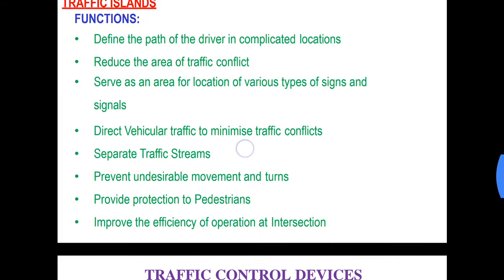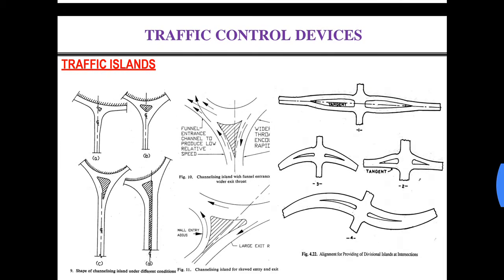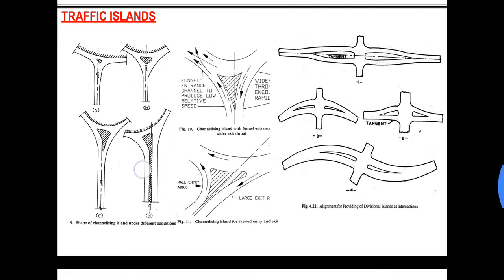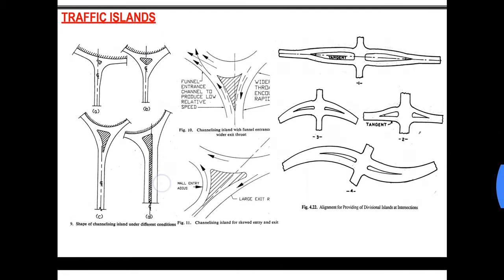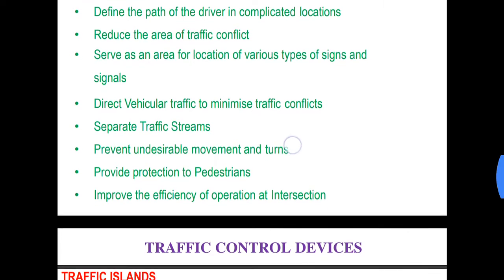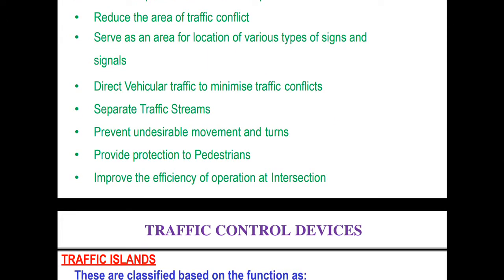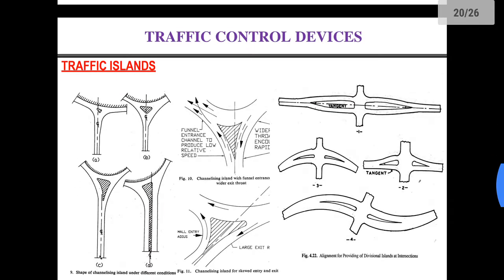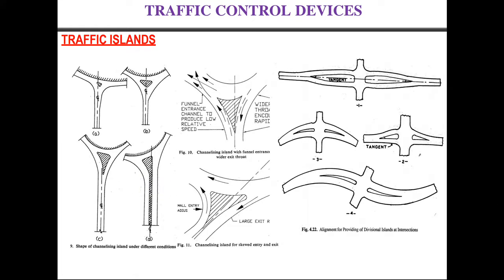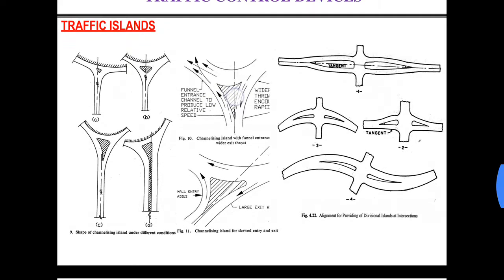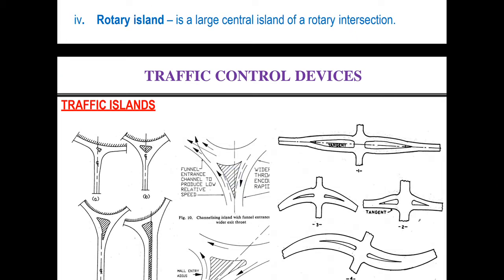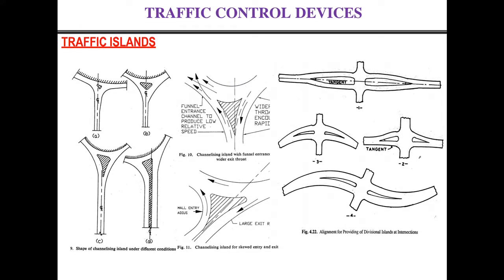Traffic islands can be used as medians, as you can see here, in order to separate any two flow of directions of vehicles or any two lanes. They prevent undesirable movement and turns. They also provide protection to pedestrians. While the pedestrians cross the roads, maybe at intersections or even at mid-block, the pedestrian can cross a single lane and then climb onto the traffic island, and whenever he sees an opportunity to cross the other lane he can do so without any hazard.